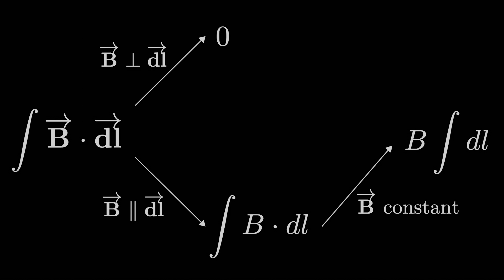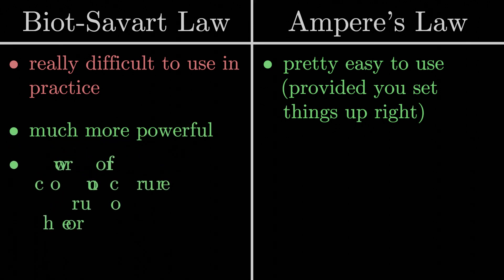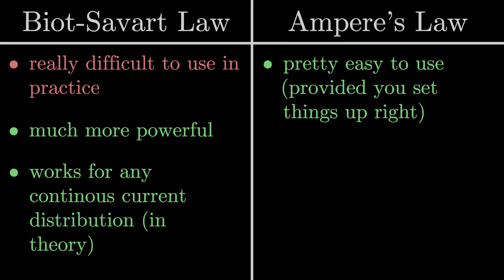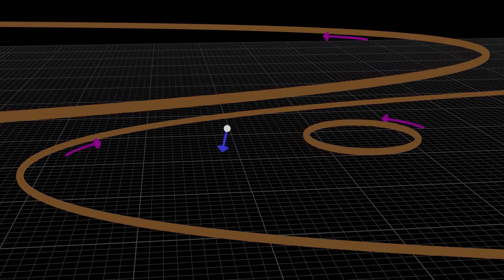So then if all that is the case, why would we ever want to use the Biot-Savart law in the first place? Couldn't we just stick with Ampere's law from here on out? The thing is, the Biot-Savart law is much more powerful. You can solve a lot more problems with the Biot-Savart law than you can with Ampere's law. And actually, in theory, the Biot-Savart law works for any possible continuous current distribution in space. For any set of currents, you can definitely, no questions asked, find an expression for the magnetic field at some point, at least in terms of an integral.